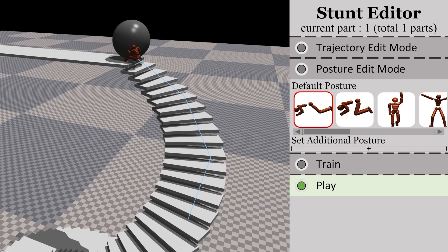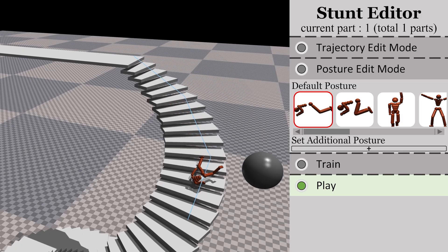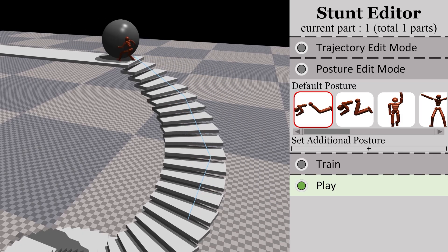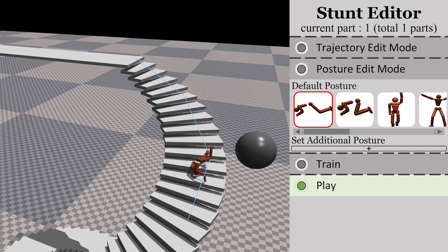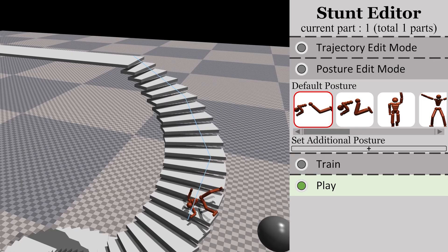After reviewing the results, we can decide whether to finalize the current part and proceed to the next one, or further refine the current part and retrain the controller. Since we are satisfied with the first part, we will now move on to the next one.